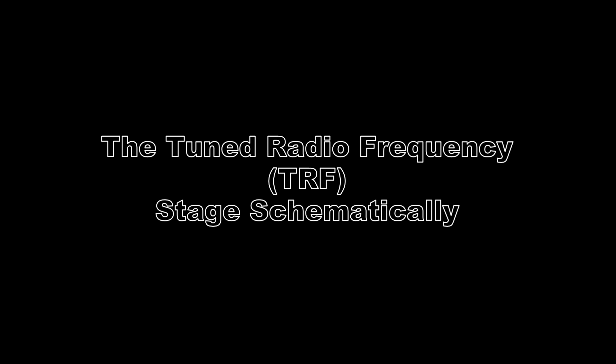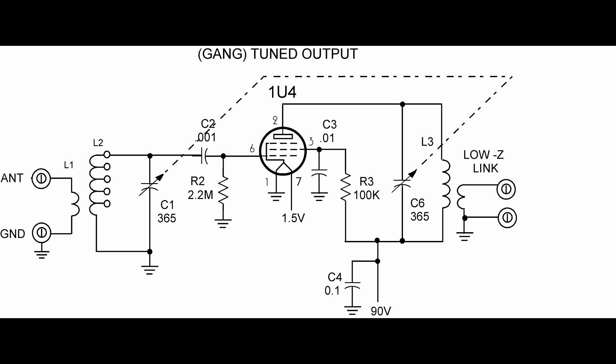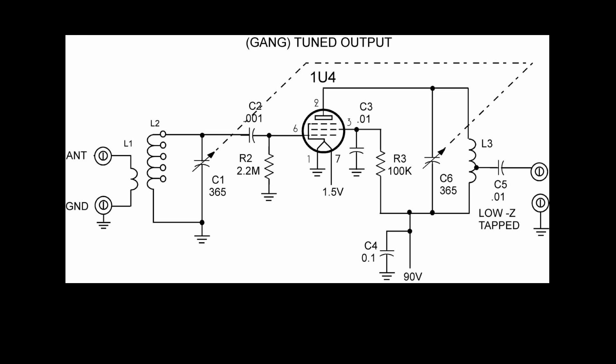So here's a basic TRF stage using a 1U4 tube. It has both a tuned input and a tuned output. This will work as long as you've got good isolation between the input and the output. But the problem is, you still could get tuned plate, tuned grid type feedback from plate to control grid, and thus this becomes an oscillator. So it needs to have neutralization for something like this to work.